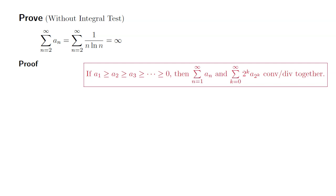All right, let's try to prove that the summation n goes from 2 to infinity of 1 over n times natural log of n diverges to infinity.